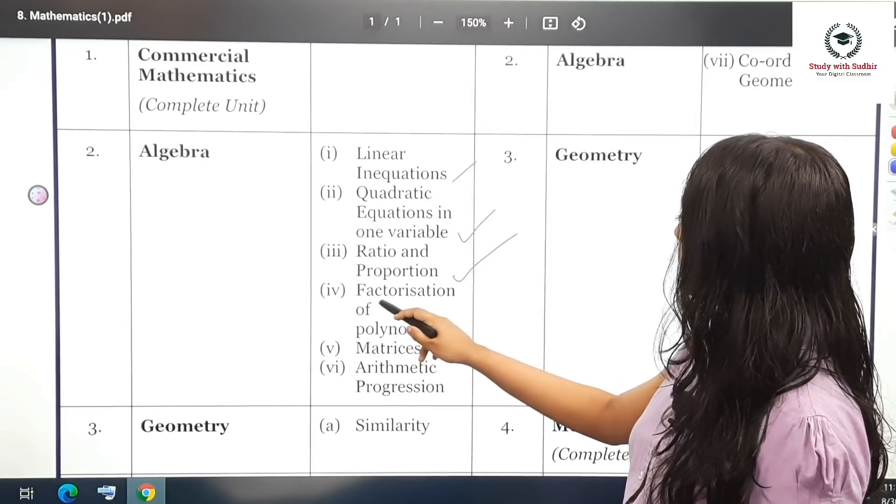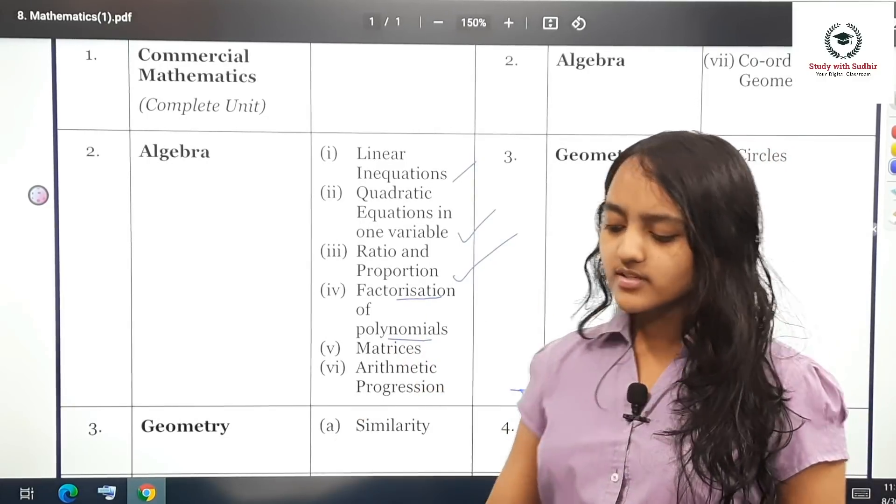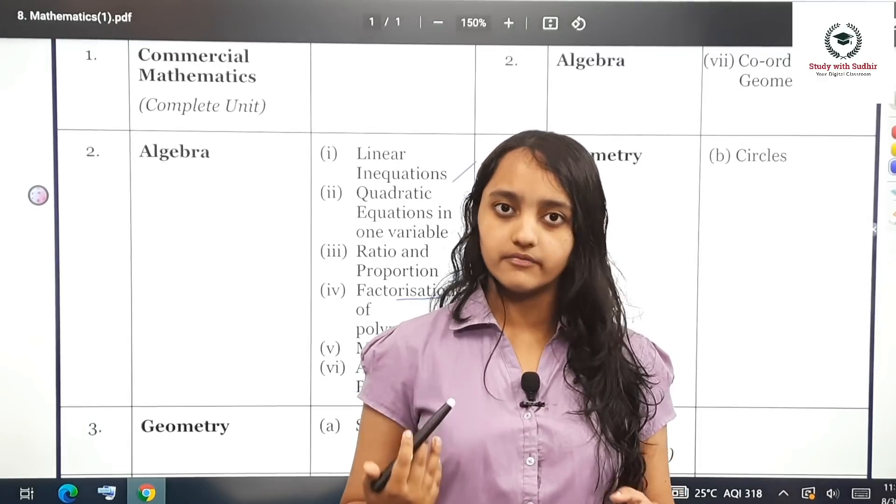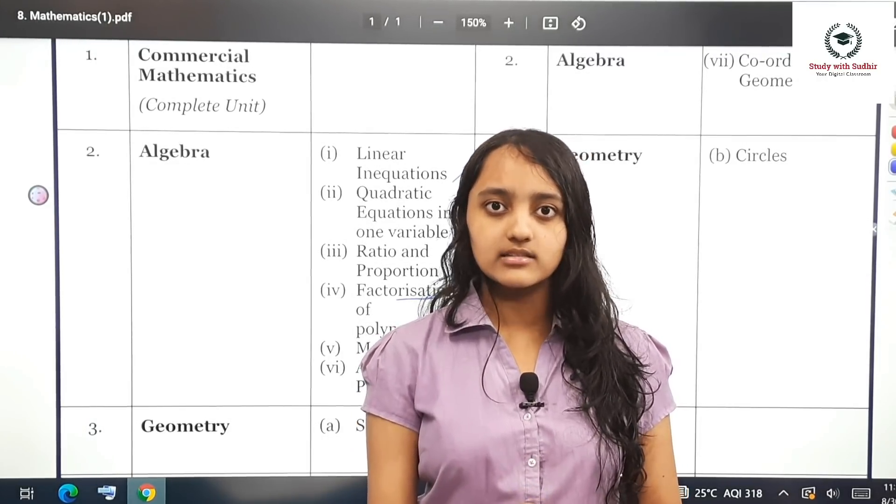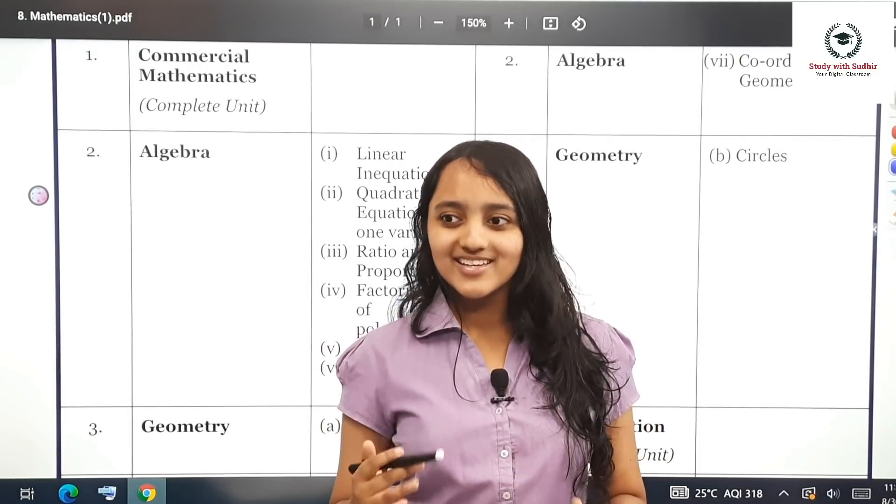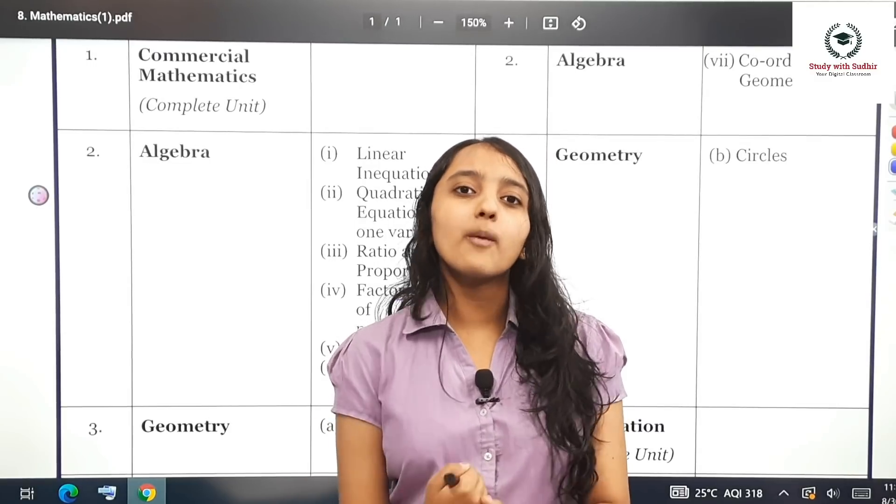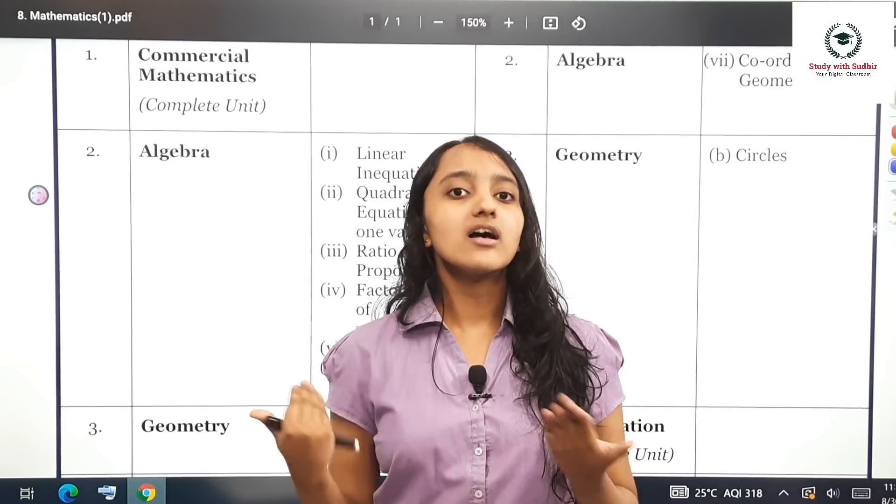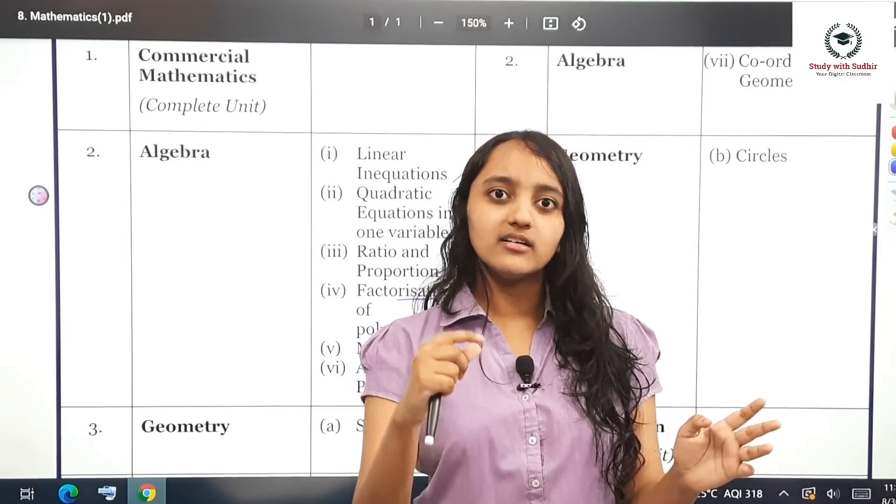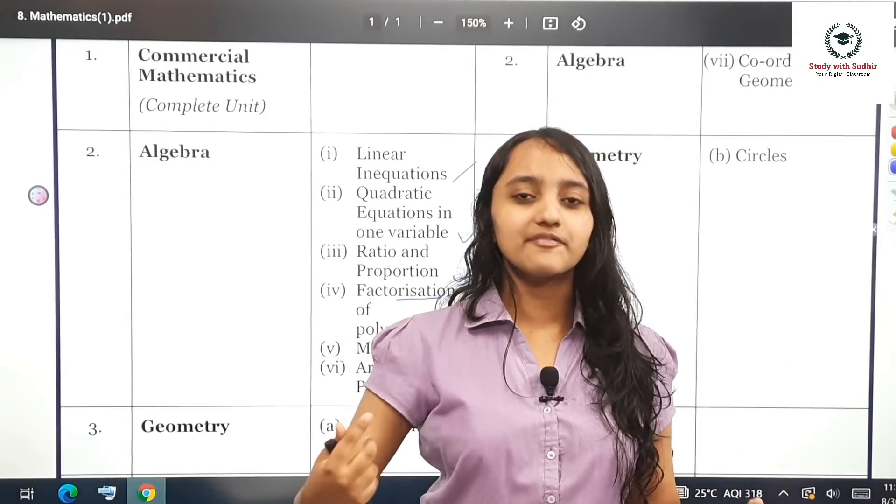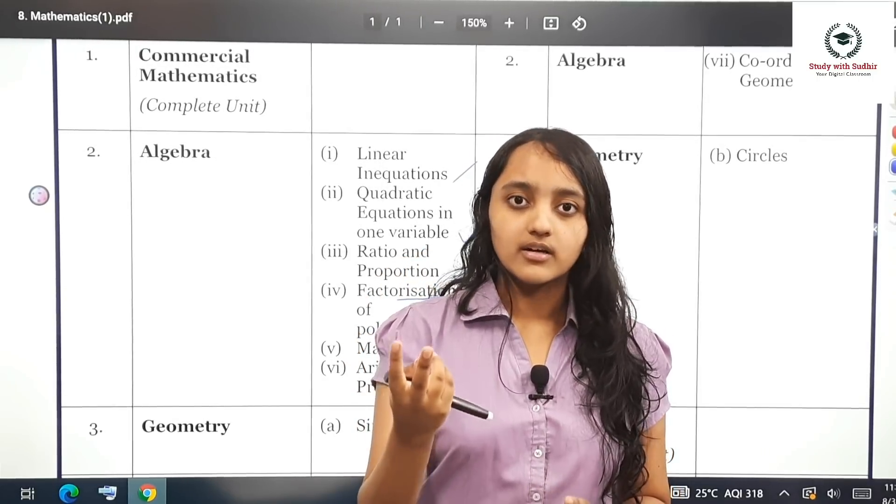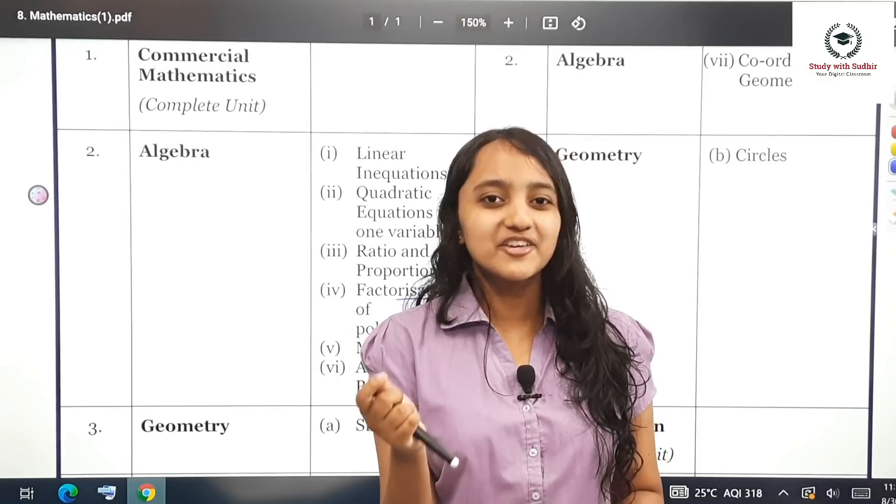The next chapter is factorization of polynomials. There is a standard method which you can use: the long division method. There is another theta method which is substitution of the options in the question. If it comes to zero, then it is a factor. That's a smarter way to solve a question faster, and that's the benefit of having a MCQ based paper.